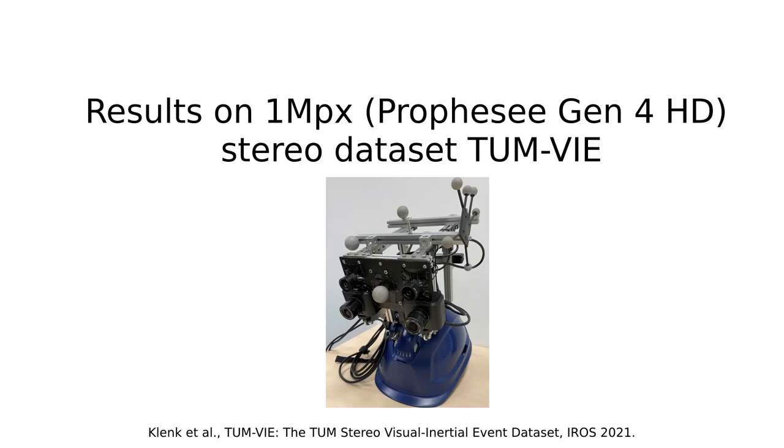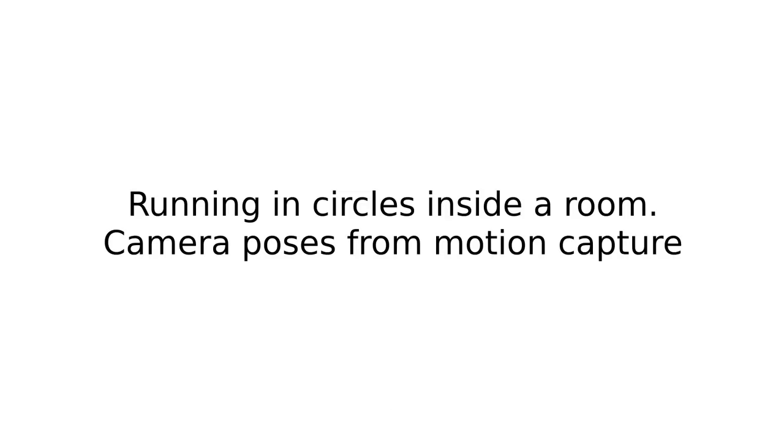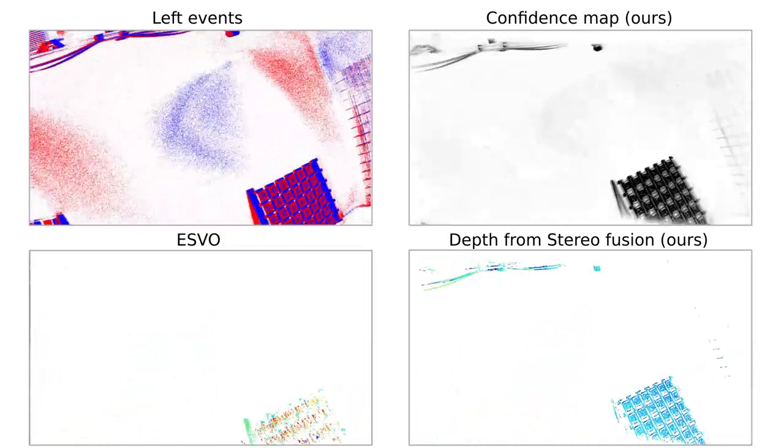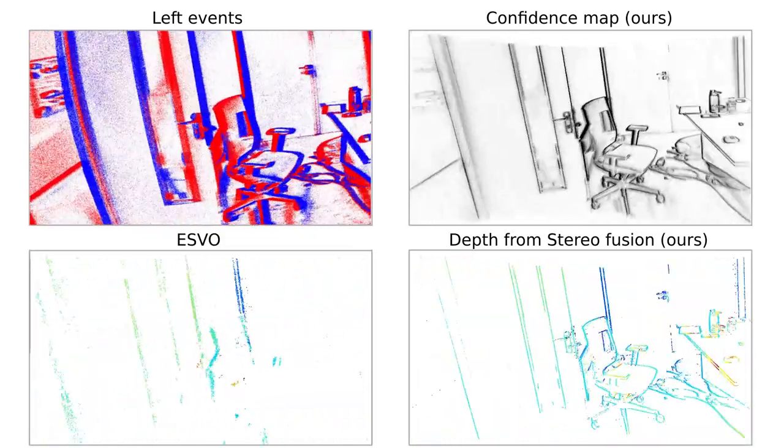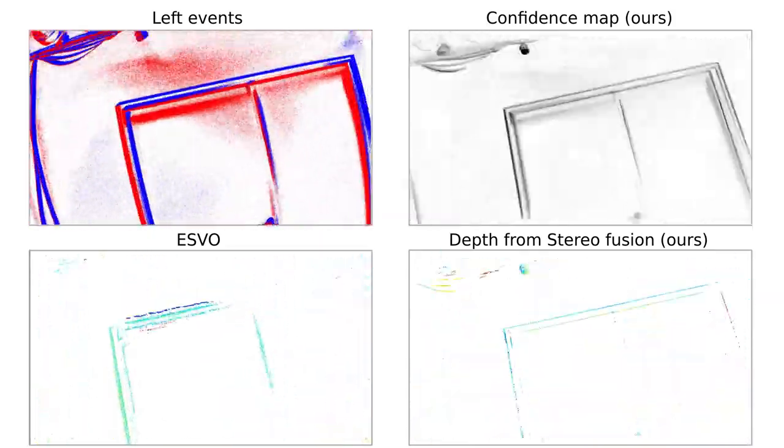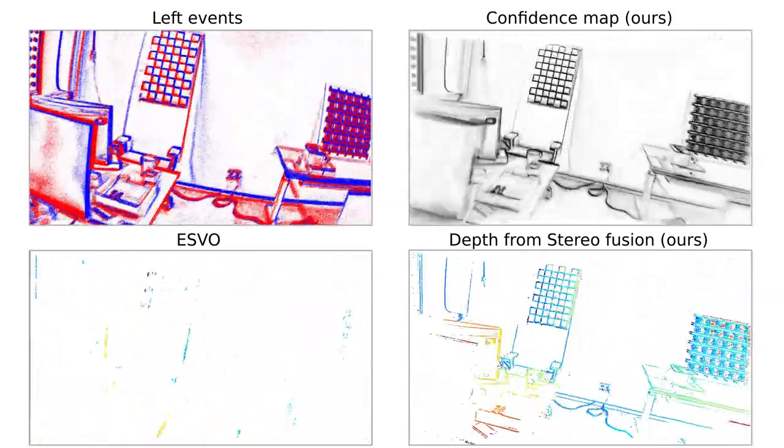We are also the first to report results on TUVM VIE, the only 1 megapixel stereo event dataset. Here, the camera rig is moved in circles around a room. In this case, we used ground truth poses available via motion capture. Our depth map looks denser than ESVO.